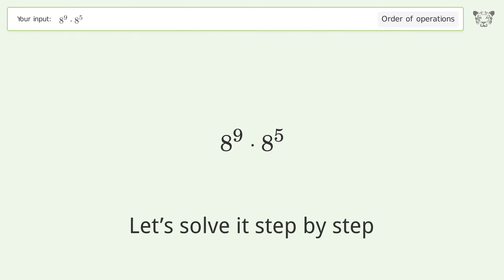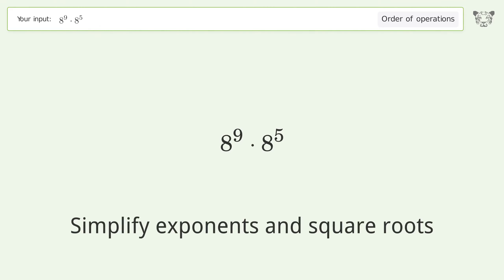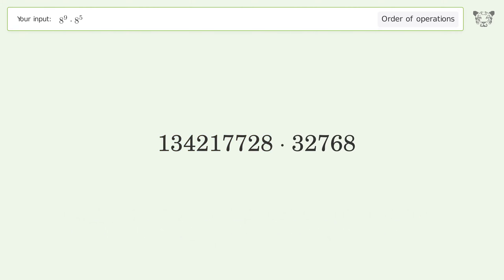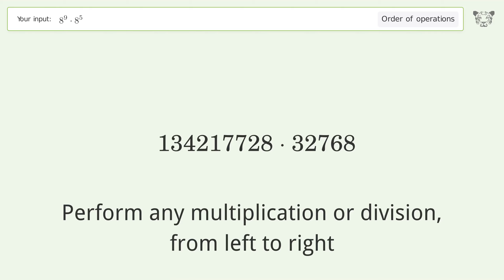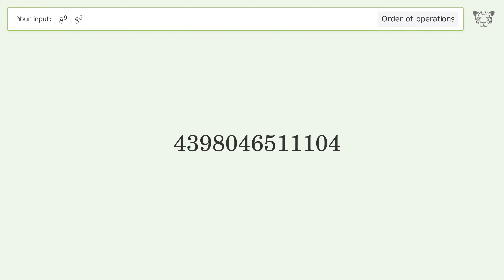Let's solve it step by step. Simplify exponents and square roots: 8 to the power of 5 equals 32,768. 8 to the power of 9 equals 134,217,728. Perform any multiplication or division from left to right: 134,217,728 times 32,768 equals 4,398,046,511,104.